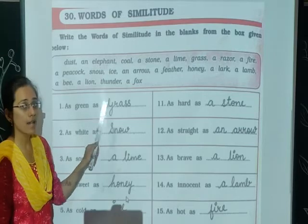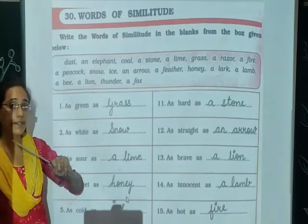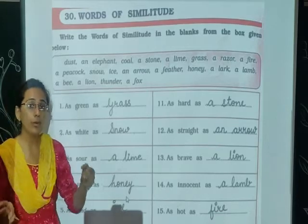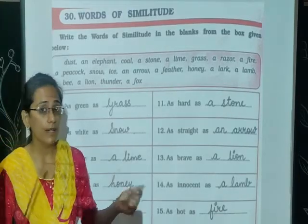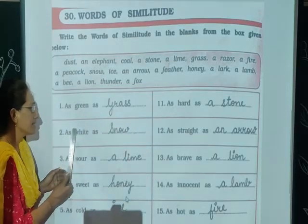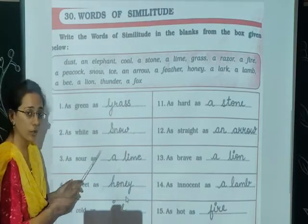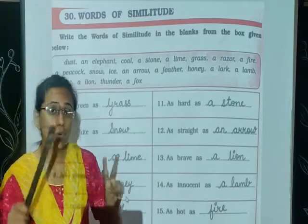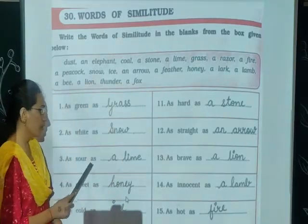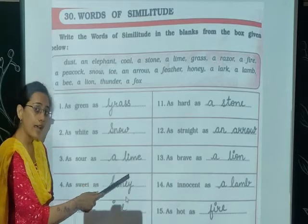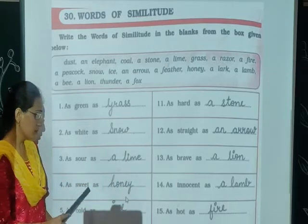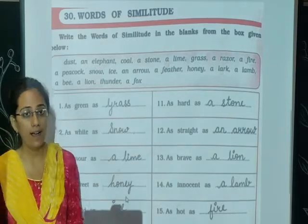First: as green as brass — the brass is of green colour, so the words are similar; they resemble each other. As white as snow — the colour is white and snow's colour is also white. As sharp as a sword — as sharp as a lime. As sweet as honey.